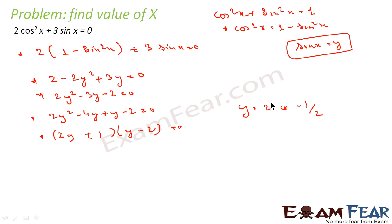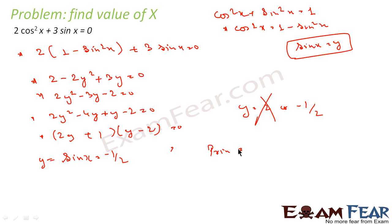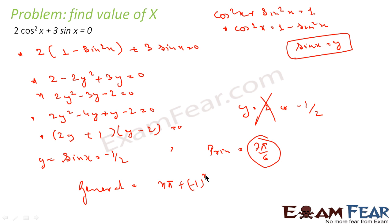We know that y cannot be 2 because y = sin x, and sin x cannot be 2 since the maximum and minimum value of sin x is −1 to 1. So we ignore that. What we get is sin x = −1/2. The principal solution is x = 7π/6, since sin(7π/6) = −1/2. The general solution will be x = nπ + (−1)ⁿ · (7π/6), where θ = 7π/6.